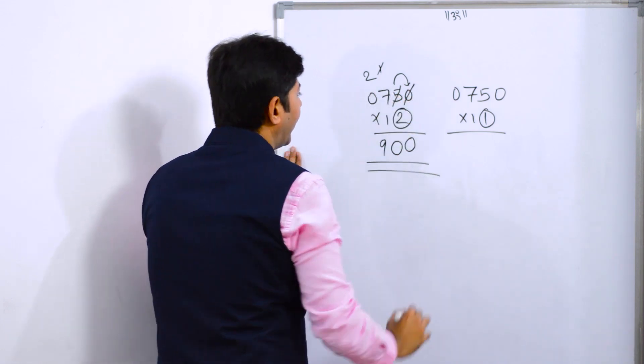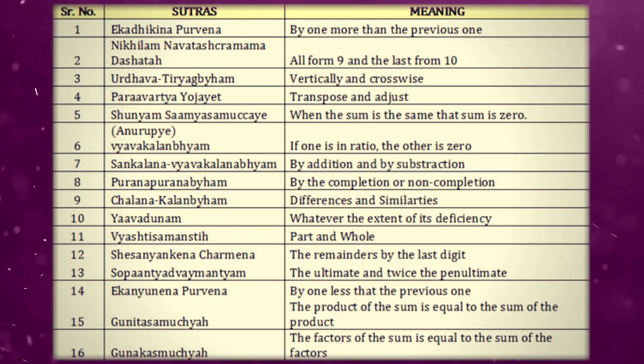The Vedic Maths is the fastest mental maths system. It is based on 16 Sutras and 13 Sub-Sutras.